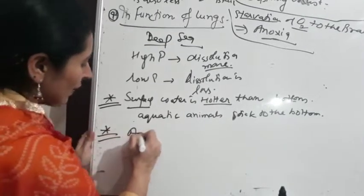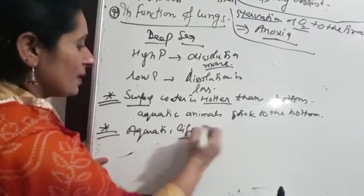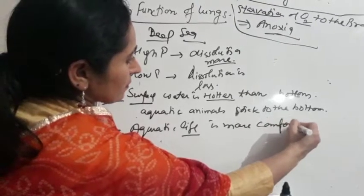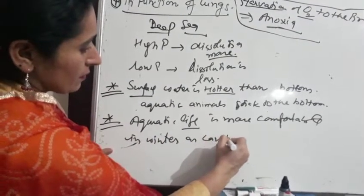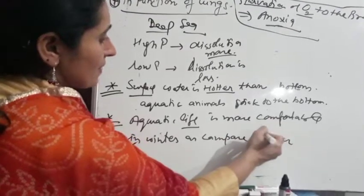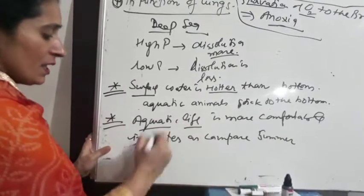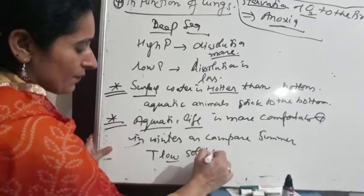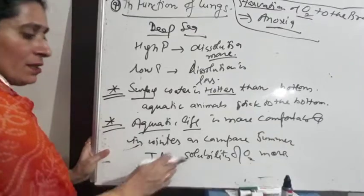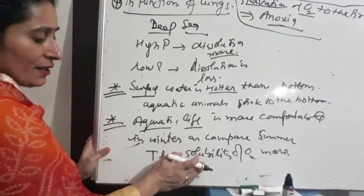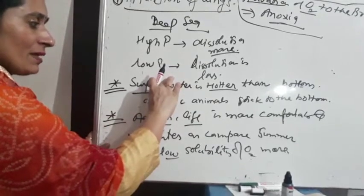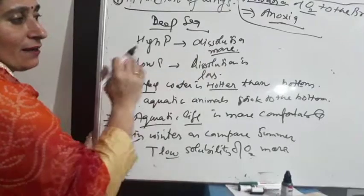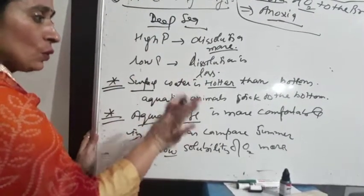This is why aquatic animals stick to the bottom — because surface water is hotter and has less dissolved oxygen, they cannot survive there. Also, aquatic life is more comfortable in winter than in summer. In winter, temperature is low so solubility of oxygen is higher. In warm water, solubility is less. Within the same water body, the bottom is always cooler and the surface is always hotter, so aquatic animals stay near the bottom to support their life.